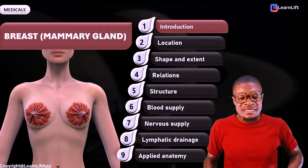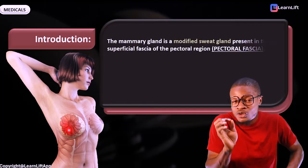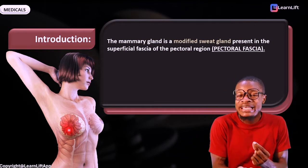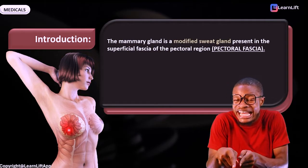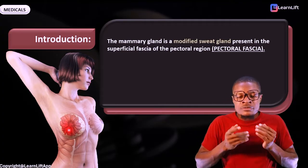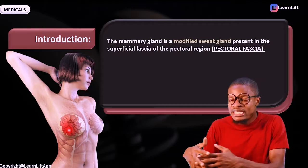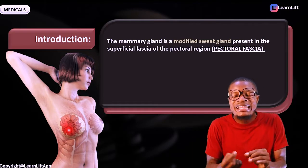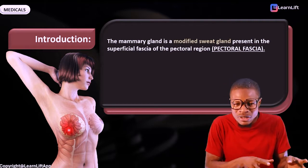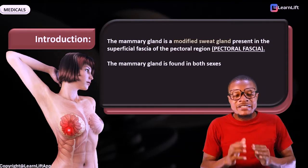Under the introduction of the breast, if they ask you to write on it, simply tell them what the breast is. The breast, or mammary gland, is a modified sweat gland. It is a sweat gland that has been modified and is present in the superficial fascia of the pectoral region, which is called the pectoral fascia.